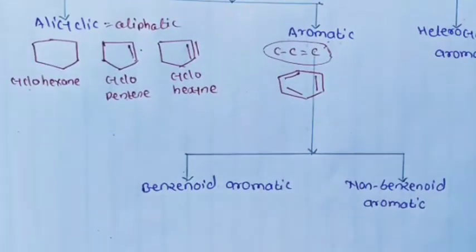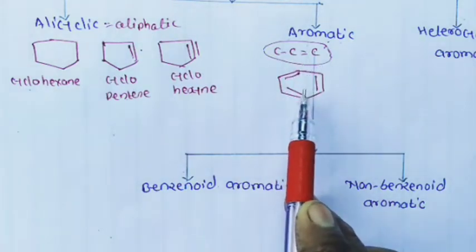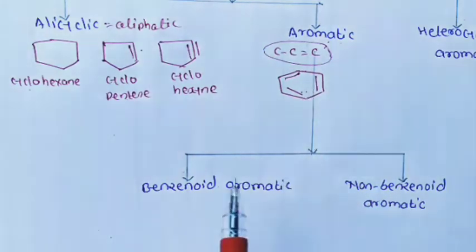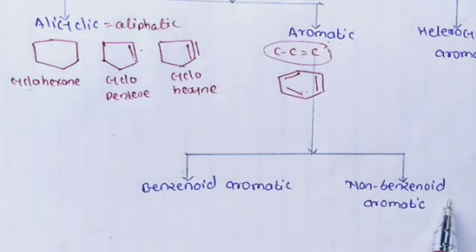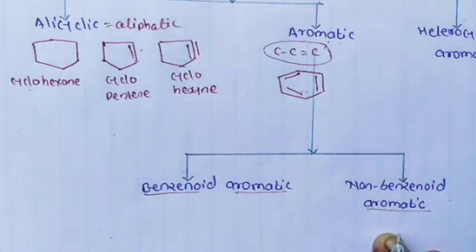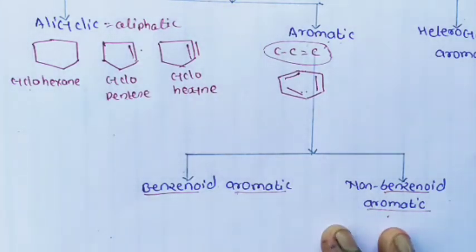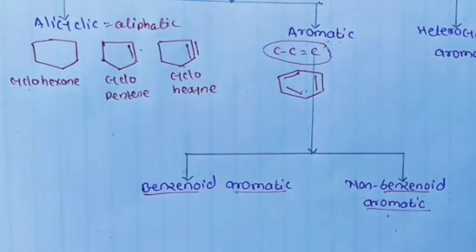Aromatic compounds are further classified into benzenoid aromatic and non-benzenoid aromatic. Benzenoid aromatic means the aromatic compound has at least one benzene ring present. Non-benzenoid aromatic means the compound has alternating carbon-carbon single and double bonds but the benzene ring is absent.